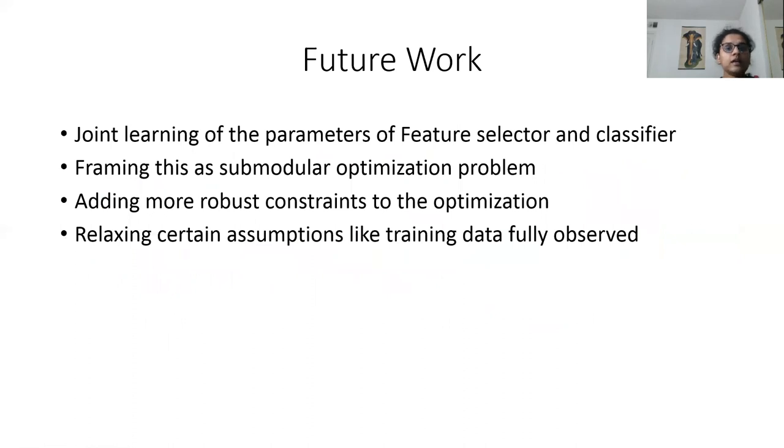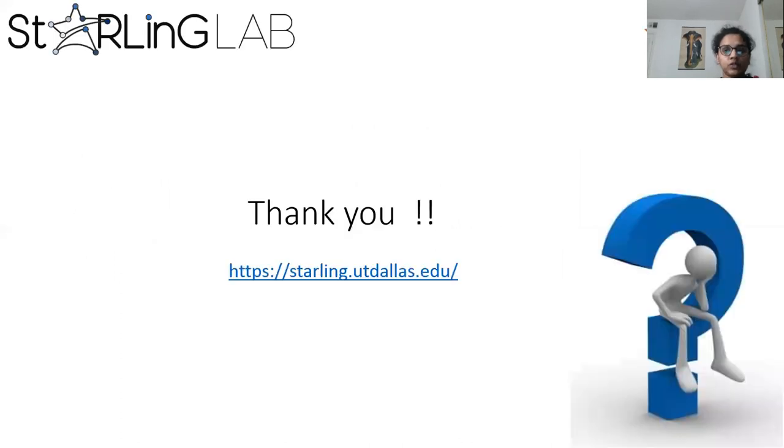Coming to future work, in this work we do not learn the parameters of the feature selector module and classifier together—that's something we wish to do. We also want to model this as a submodular optimization problem, add more robust constraints, and relax certain assumptions like the training data being fully observed. Thank you.